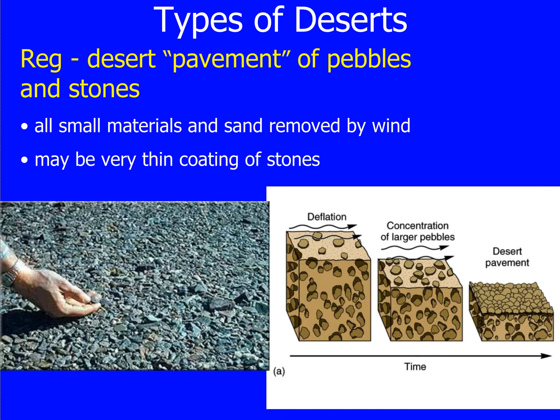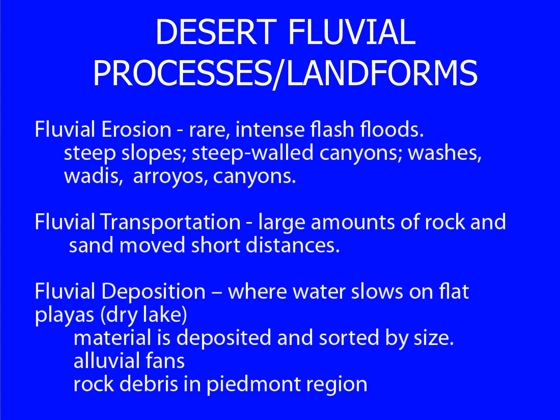Another type of desert is the Reg, or a desert pavement of pebbles and stones. All small material and sand has been removed by the wind, and it will often leave a very thin coating of stone. Fluvial or water erosion is rare.